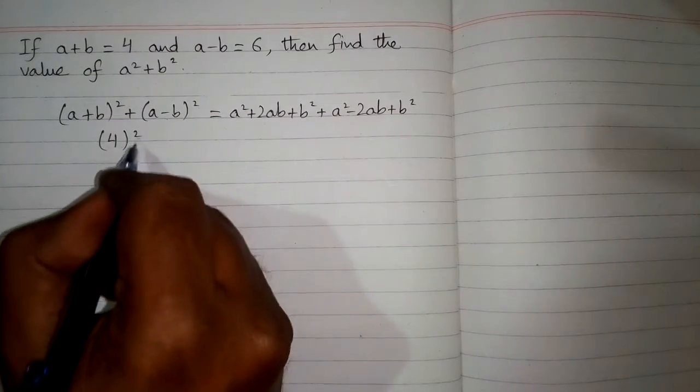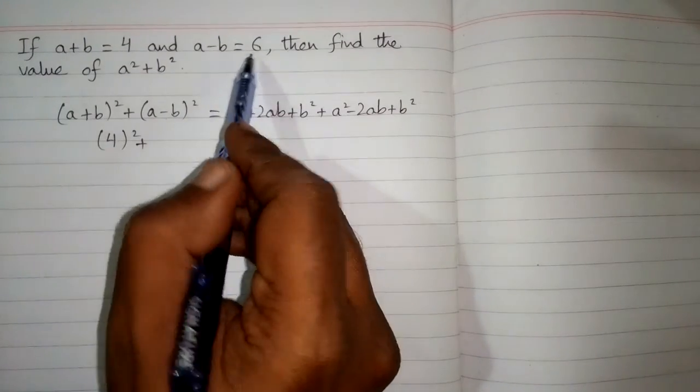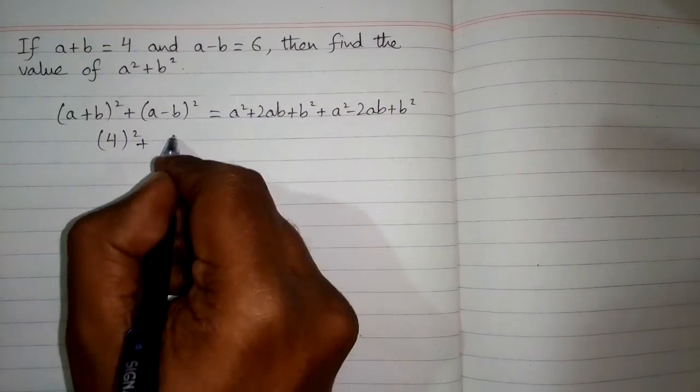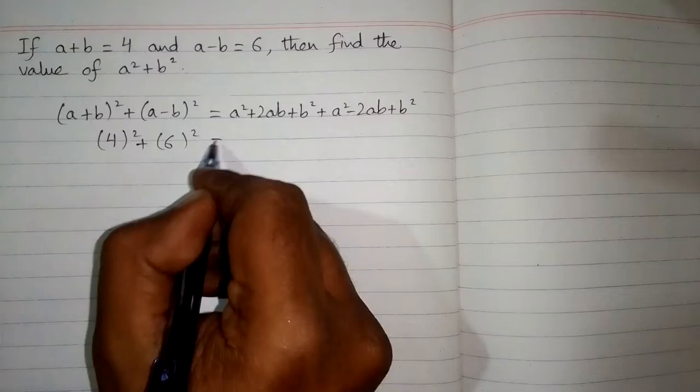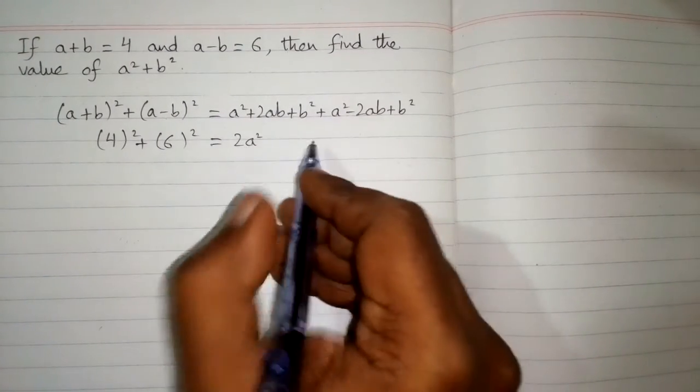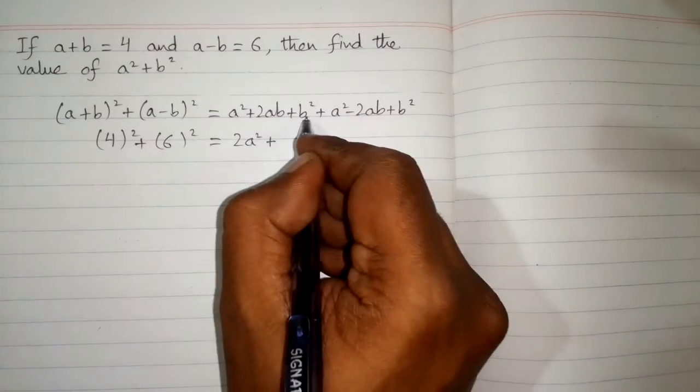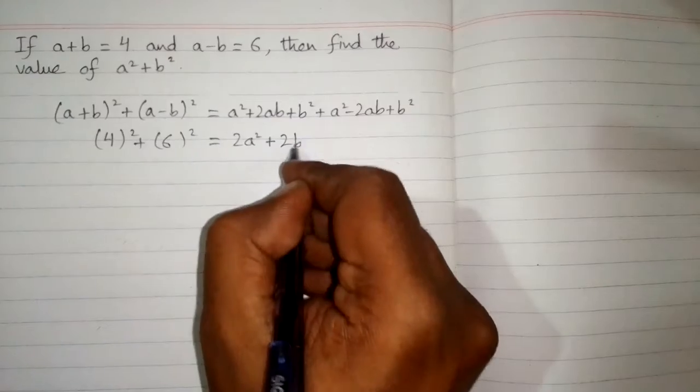So we will write 4 square plus and the value of a minus b is 6 so we put 6 over here so we have square of 6. Now a square plus a square is 2a square and 2ab minus 2ab is 0 and b square plus b square is 2b square.